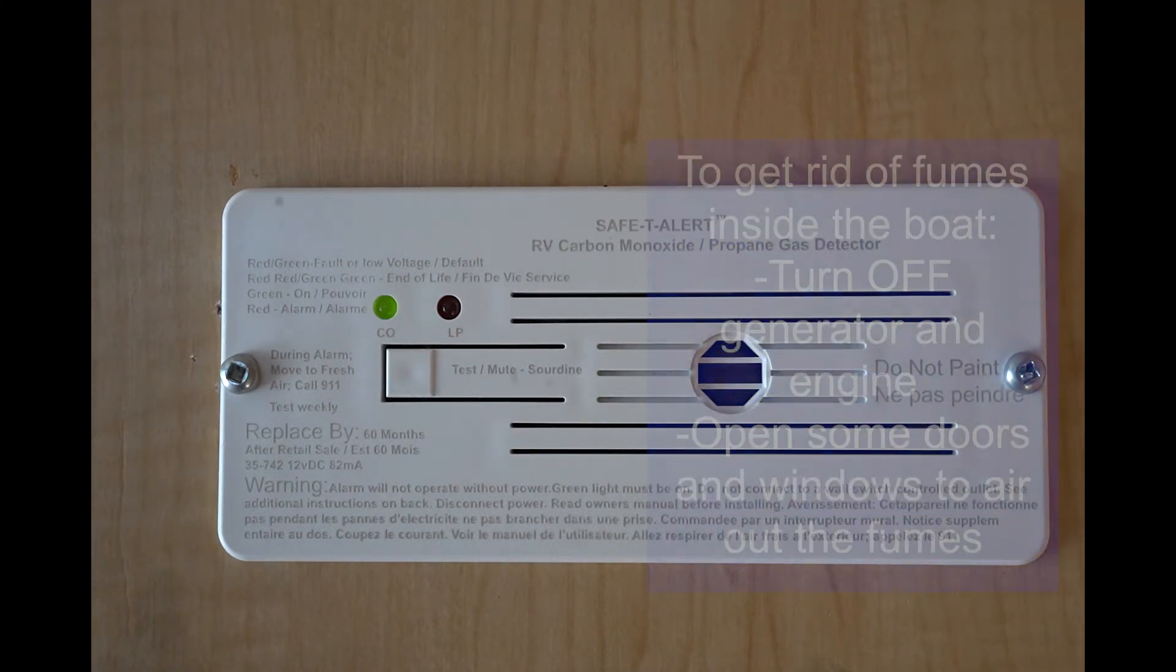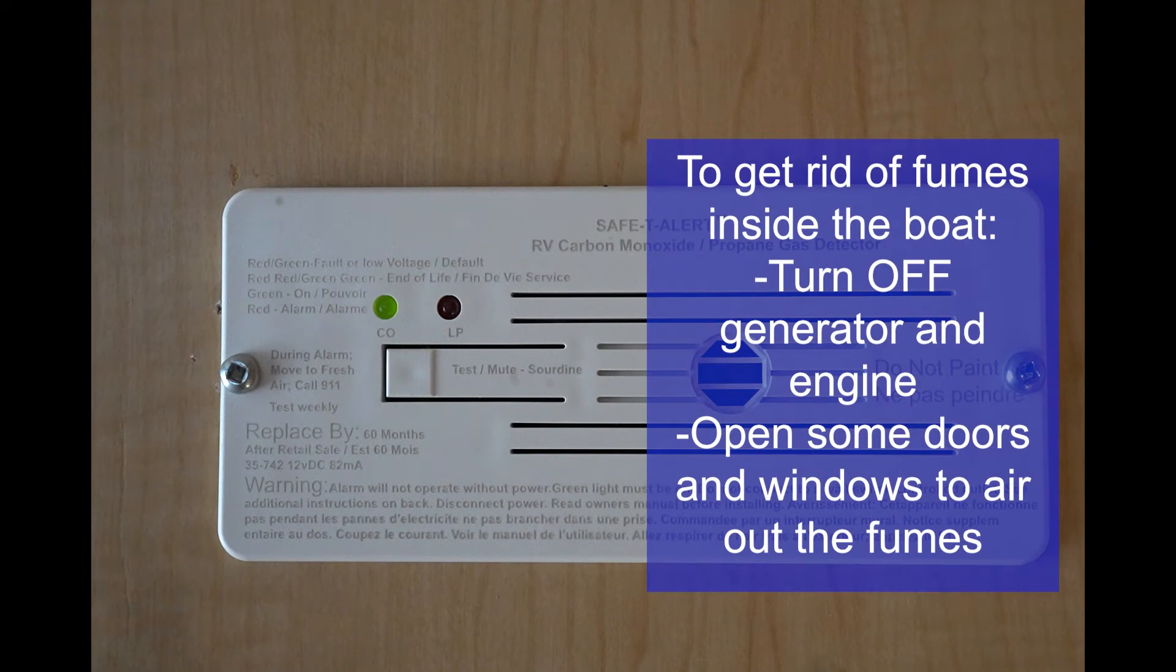If you get that CO alarm going off, first thing you want to do is shut down your generator and engine, open up some doors and windows, and let your boat air out to get rid of the fumes that are inside.